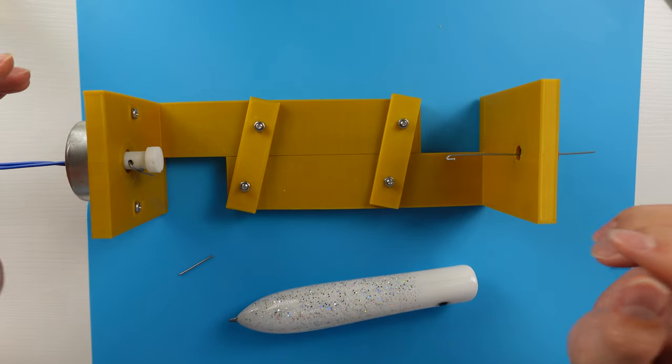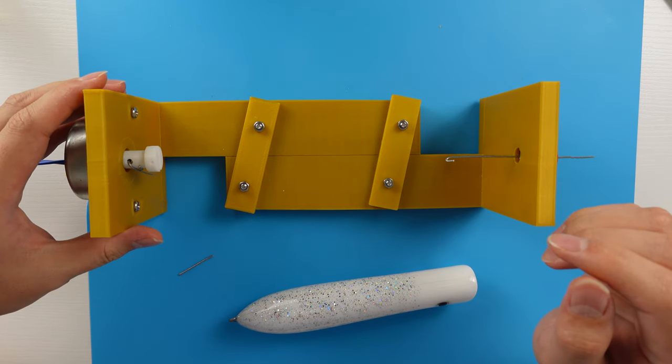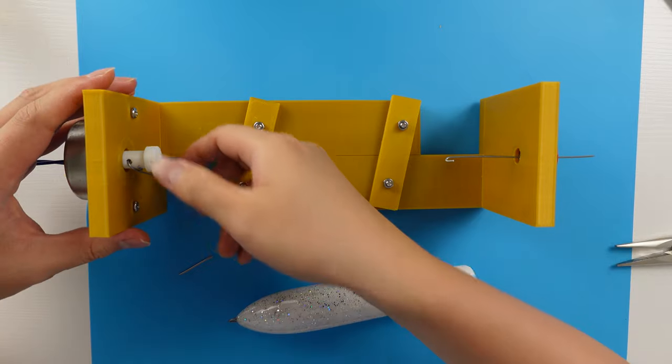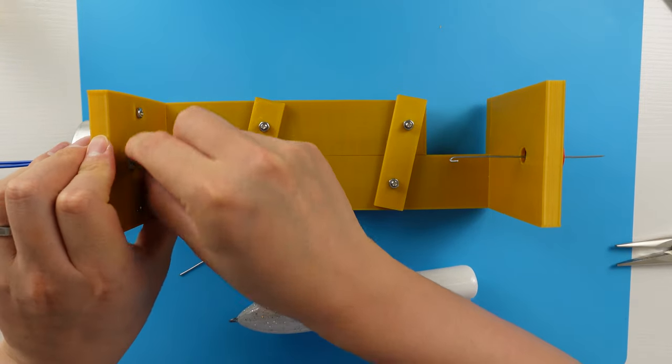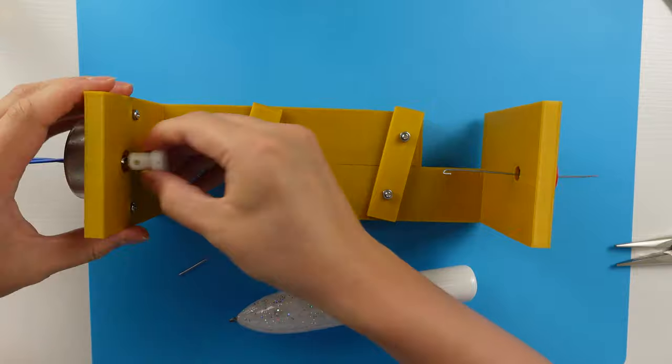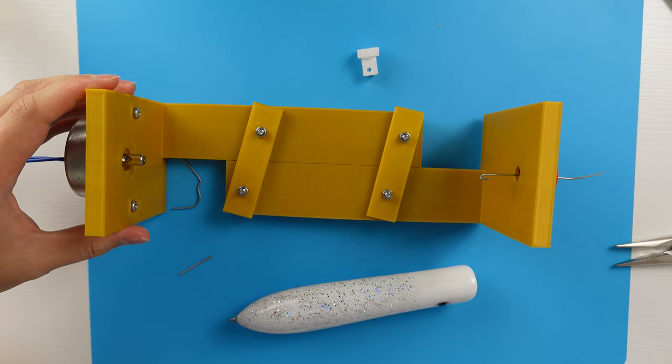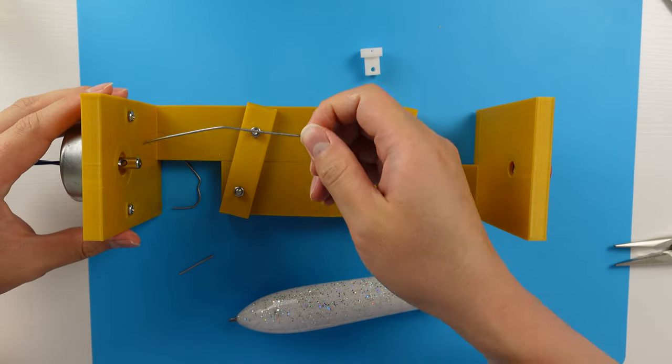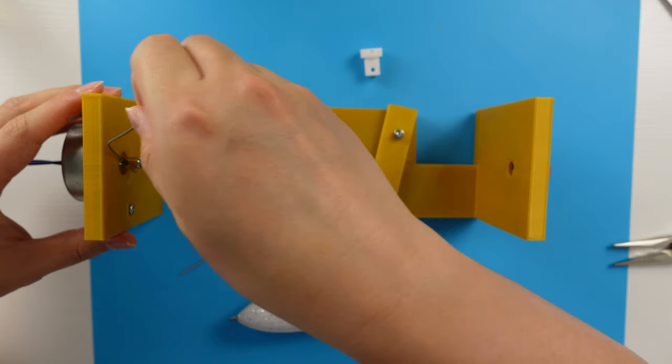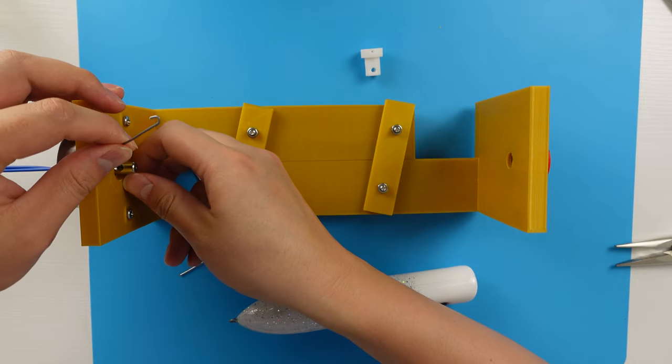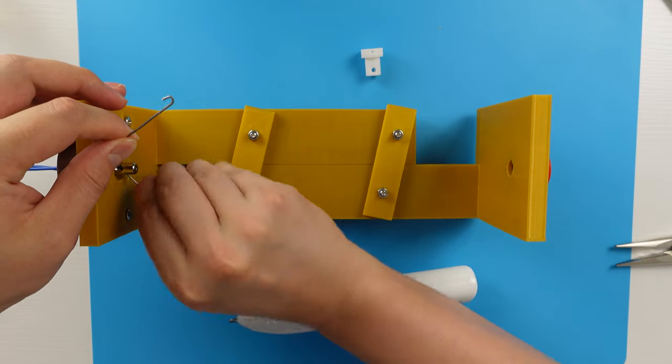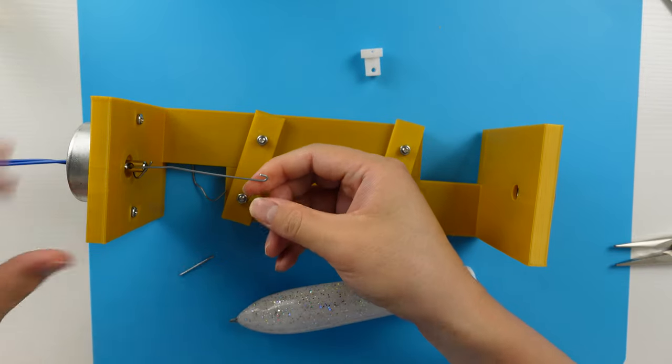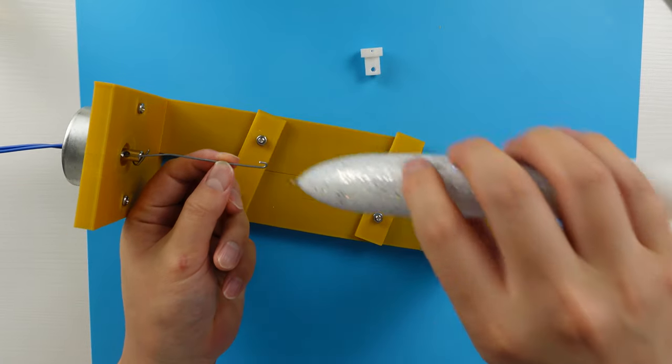If your lure is small, or your hook eye is not on the side of your lure, you can remove this part. Just use a wire, insert here, and attach your lure here.